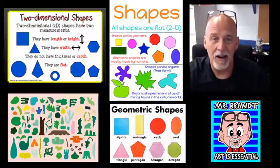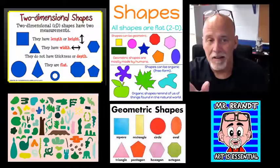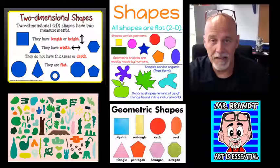Now we're going to start by talking about shapes. Shapes are two-dimensional — that means they have height, length, and width, but they don't have depth. They're not 3D, not like a form where you see a 3D cube. Shapes are totally flat.